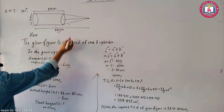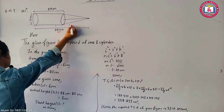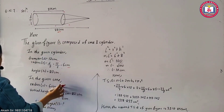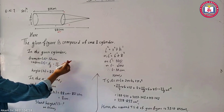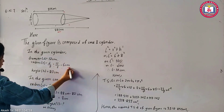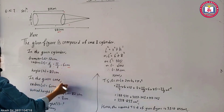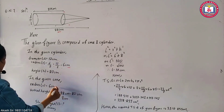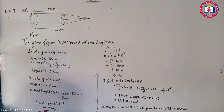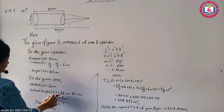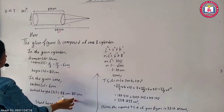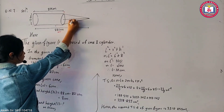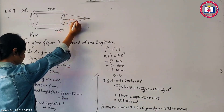This is a cone. The cone radius equals 6 cm. This is the vertical height of the cone.